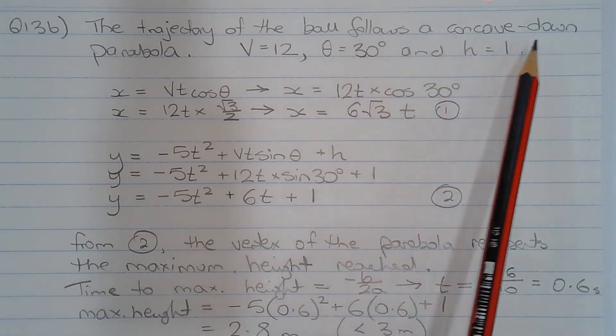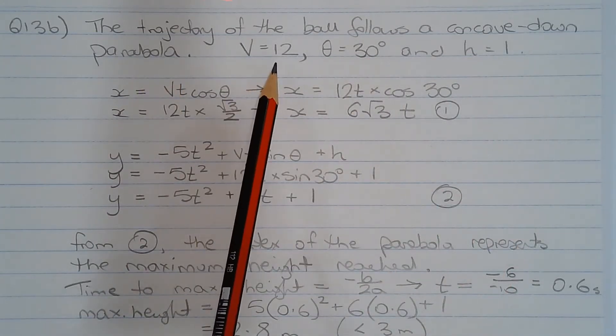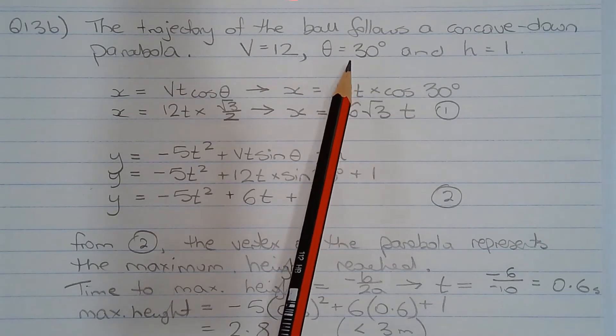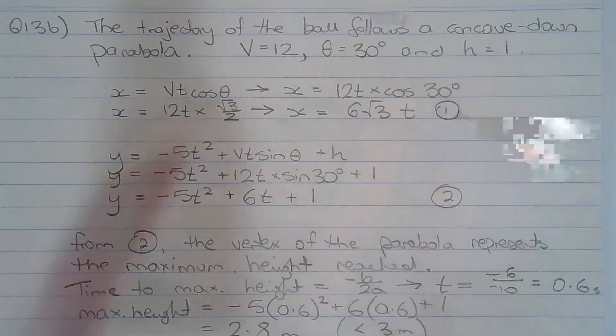The trajectory of the ball follows a concave down parabola. The speed of projection is equal to 12 meters per second, the angle of projection is 30 degrees above the horizontal, and the height of projection is 1 meter above the floor.